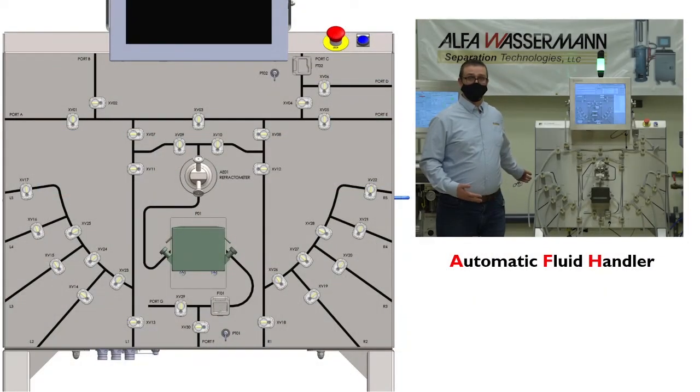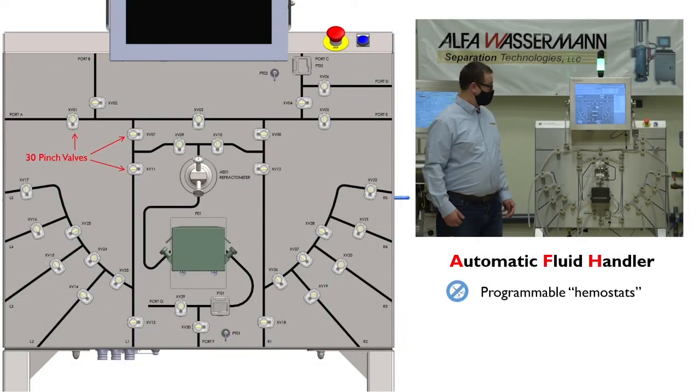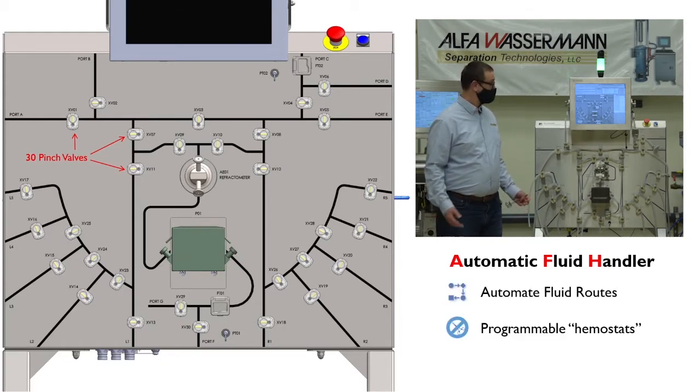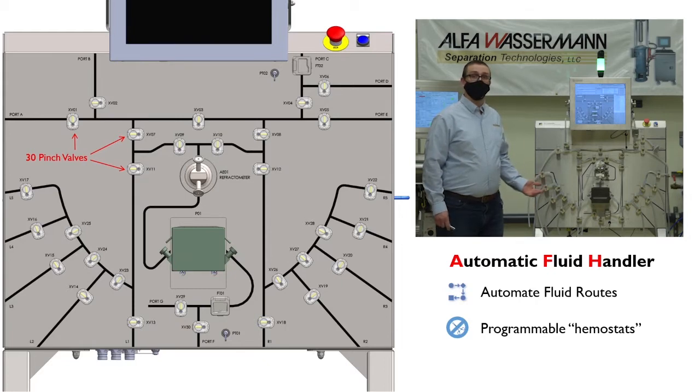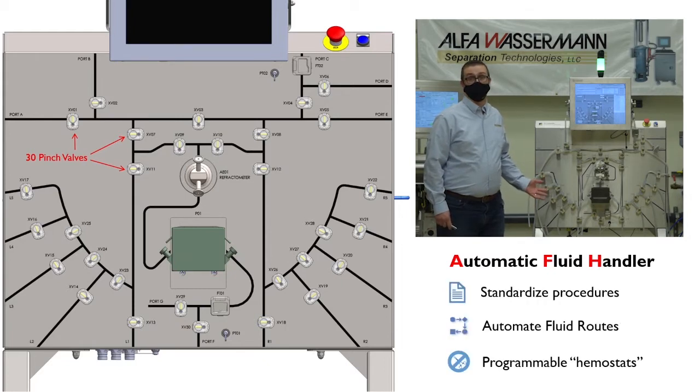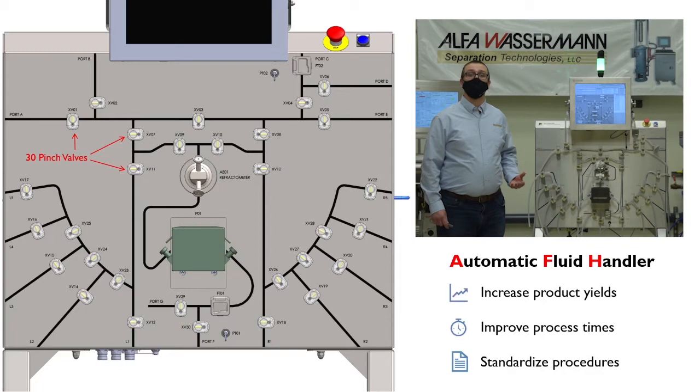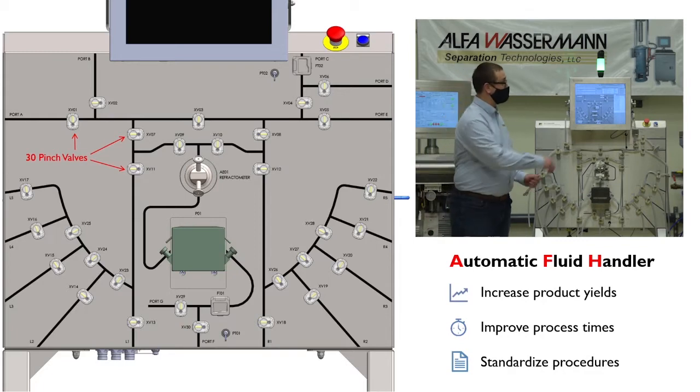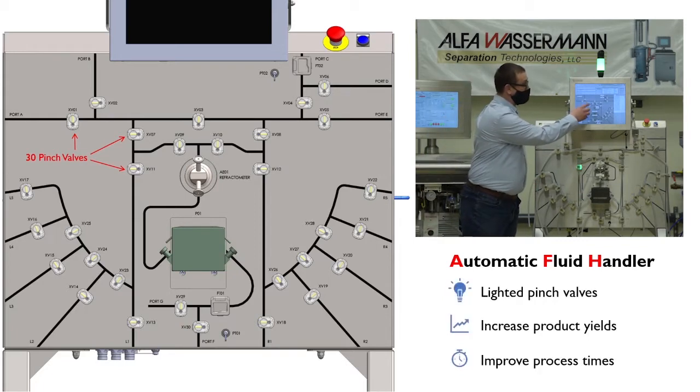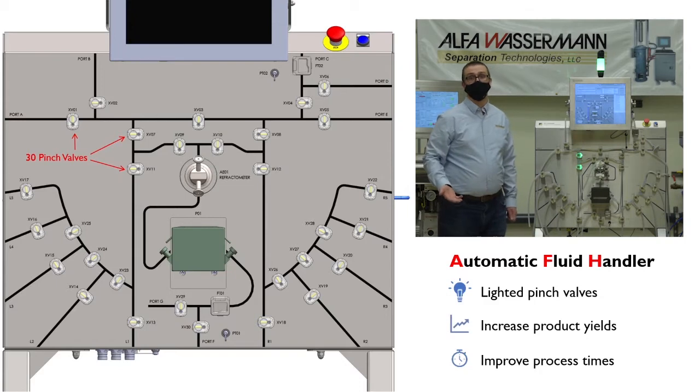We've replaced traditional hemostats with a series of 30 programmable pinch valves. Fluid paths can be automatically routed by opening and closing valves based on a defined method. This eliminates the need for an operator to determine and manually route fluids during critical process steps, which improves method performance and increases product yield. As these paths are open, the respective pinch valves are illuminated green, which makes it easier for an operator to monitor the entire process.